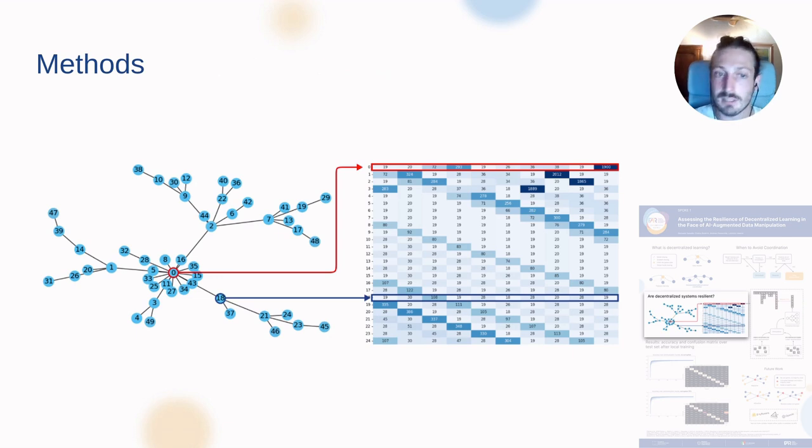Within these settings of decentralized without coordination, we took a Barabasi-Albert graph because it resembles a lot of situations that we can see in the wild, for example, social network graphs. And then in this graph we made up a distribution which is not IID, and basically every node sees different datasets, different samples, different images of the MNIST dataset. The distribution is random, so we may end up with a node which has most of the samples for class 4, and another node which has most of the samples for class 5.